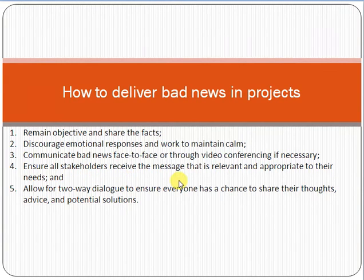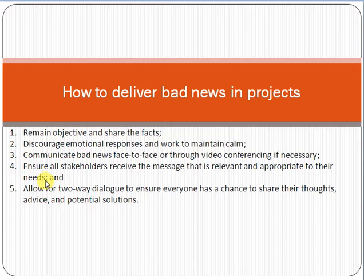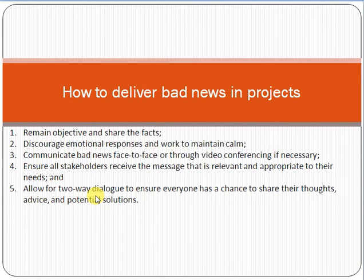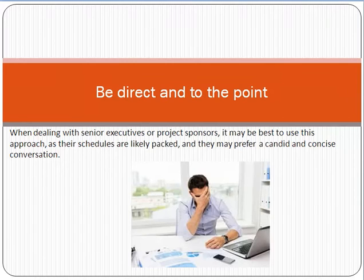Ensure that all stakeholders receive the message that is relevant and appropriate to their needs. Whenever you are giving bad news that is relevant to more than one person — for example, four people are affected — try to conduct a session rather than giving each resource the news individually. Try to give the relevant information or bad news to all the people simultaneously. The session should be a two-way dialogue where people are talking to each other, giving their feedback, and you are responding based on their feedback.